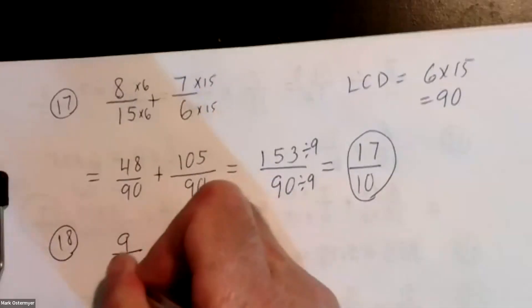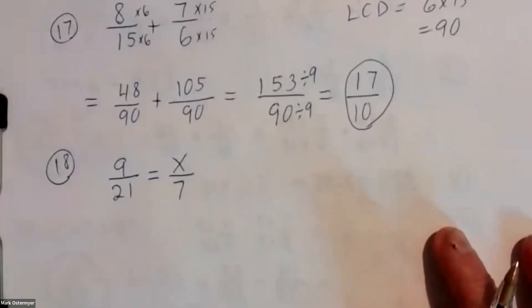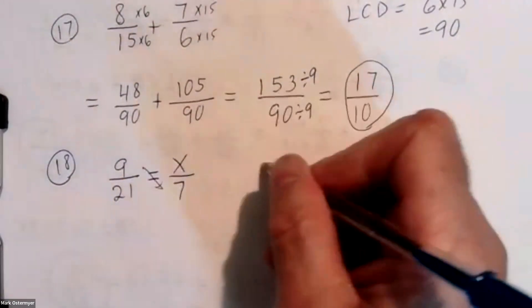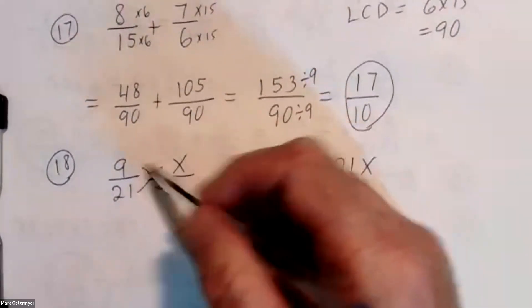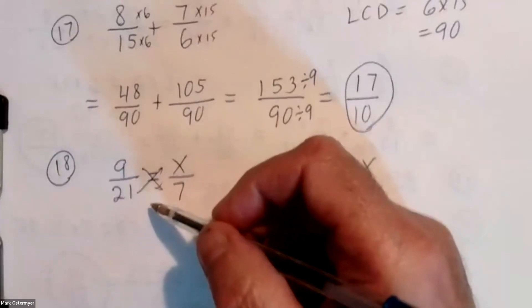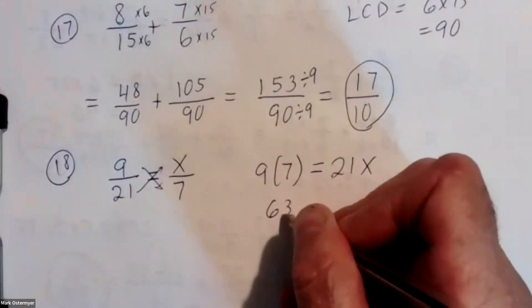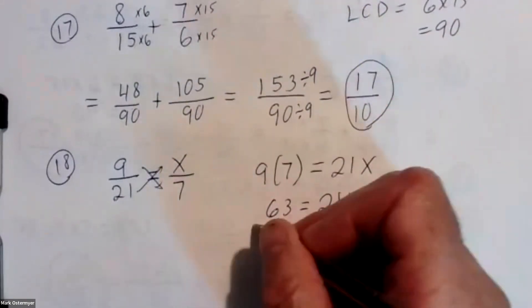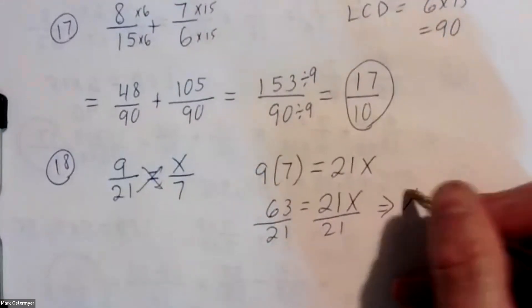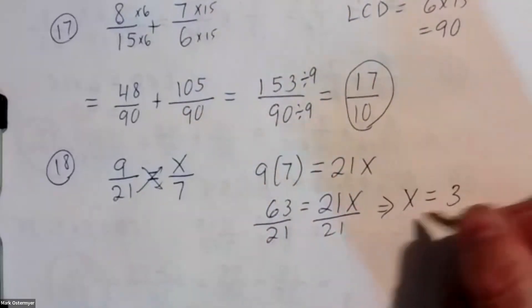Number eighteen: solve for the variable. Nine over twenty-one equals x over seven — this is a proportion. Cross multiply: nine times seven equals twenty-one times x. We're cross multiplying, not cross-canceling, because we have an equal sign between these fractions. What's nine times seven? Sixty-three. How do we solve for x? Divide by twenty-one. Twenty-one goes into sixty-three three times — x equals three.